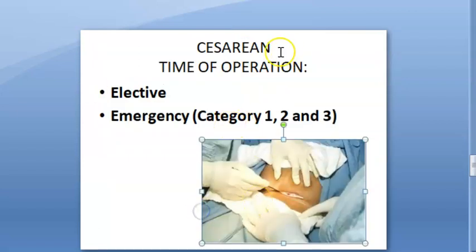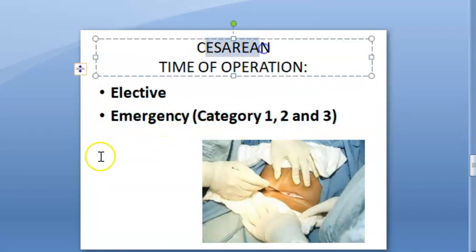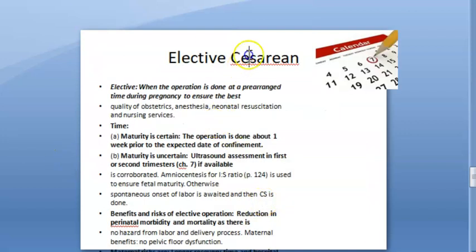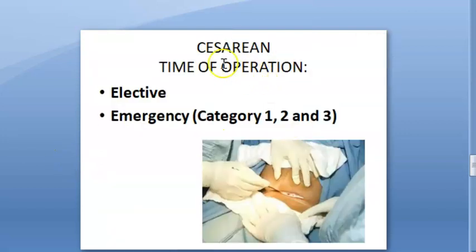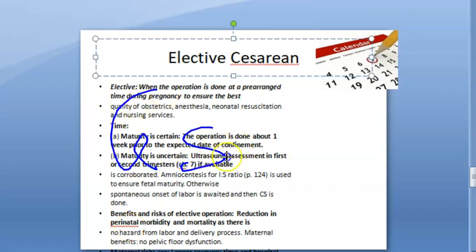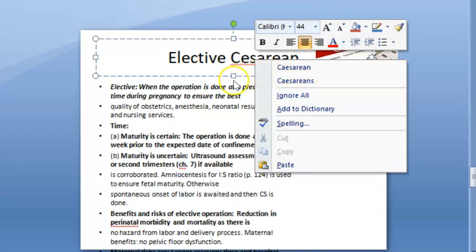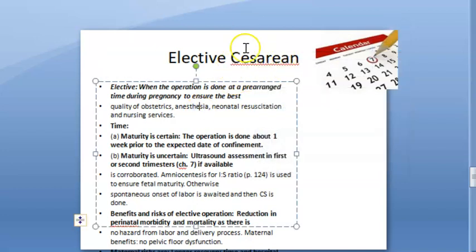In this video, let us look at the timing of caesarean operations — elective caesarean or emergency caesarean. In emergency, you have categories one, two, and three. Before that, look at the spelling of caesarean. The correct spelling is C-A-E-S-A-R-E-A-N, though 'cesarean' is also widely accepted. Just go with 'cesarean' as the easiest spelling to practice.